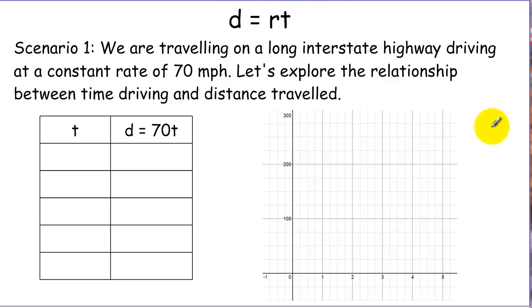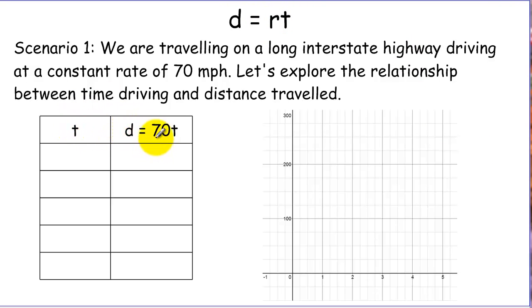This is a formula we use all the time when we're traveling on vacations, for example. So let's look at our first scenario. In this scenario we're traveling on a long stretch of highway, driving at a constant rate of 70 miles per hour. We want to explore the relationship between time and distance traveled. So we can put 70 in for the rate and have our function here.